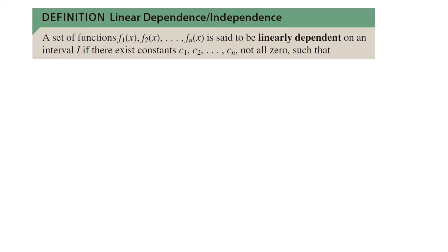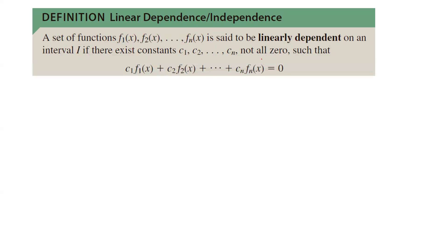The definition of linearly independent and linearly dependent functions. A set of functions like f1, f2, f3, and fn is said to be linearly dependent on an interval like i if you can find constants like c1, c2, c3, cn that are not all equal to 0 such that the linear combination of these functions becomes 0.